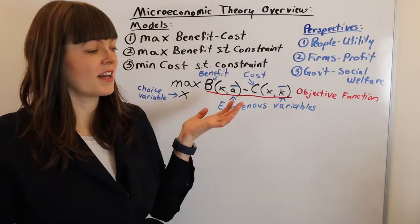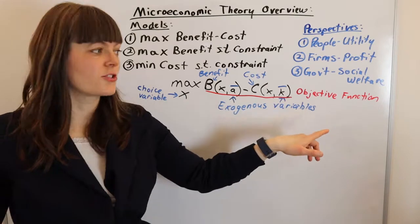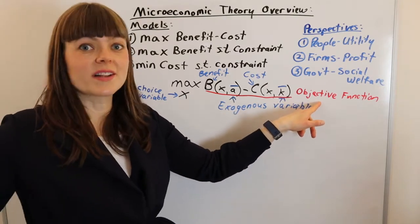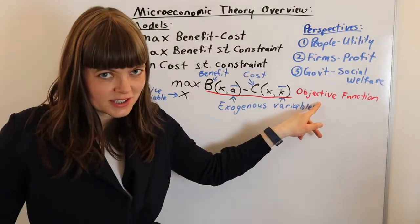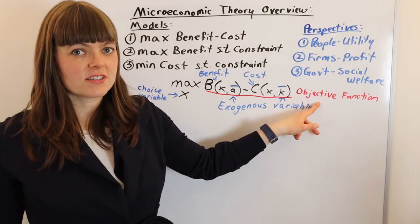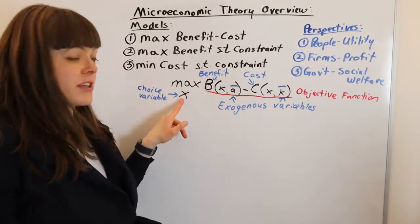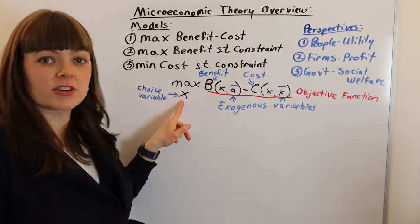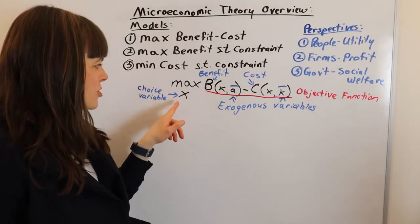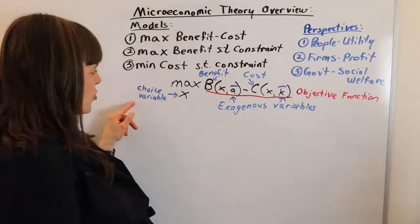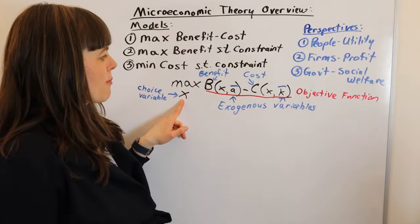The objective function is named very intuitively—you can ask yourself what is this person's objective, what are they trying to accomplish when making these decisions. The decisions have to do with the choice variable, that's the thing that the person, government, or firm has control over. Choice variable is another very intuitively named part of our model.